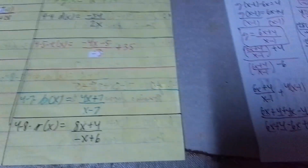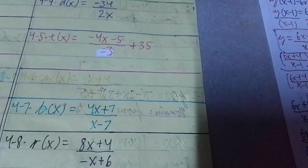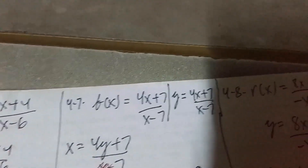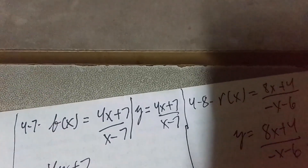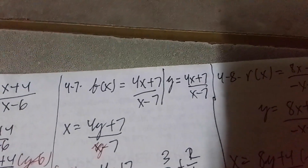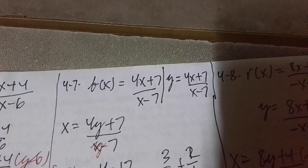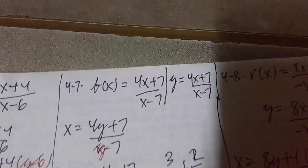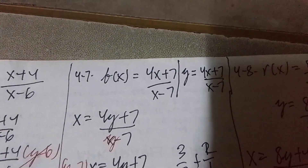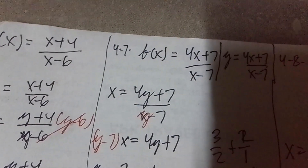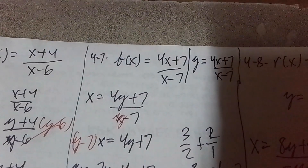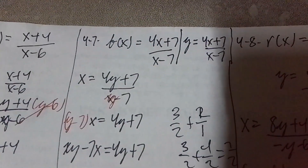So now let's go to number 7. In number 7, we have 4x plus 7 divided by x minus 7. How do you solve for the inverse? Again, the rule stays the same. You have to interchange that to y, and that becomes y is equivalent to 4x plus 7 divided by the quantity of x minus 7. The next thing we do is interchange x and y, and then our goal is to multiply both sides of the equation by the LCD, which is y minus 7.